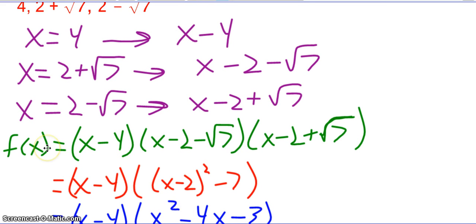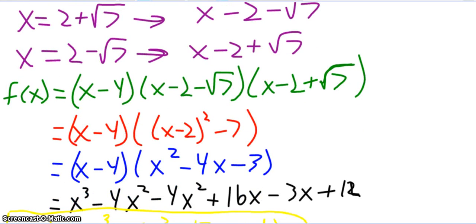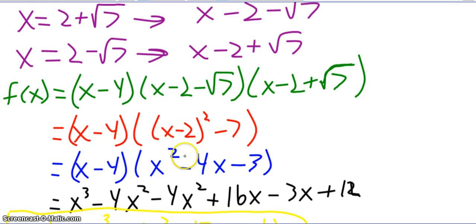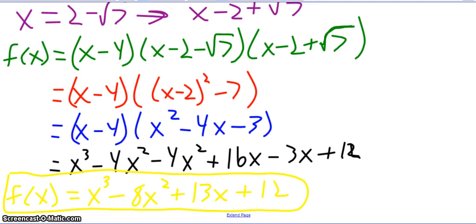So I can rewrite this as a polynomial: f of x equals the quantity x minus 4 times the quantity x minus 2 minus root 7 times the quantity x minus 2 plus root 7. Multiply out the roots together first — treat it like difference of squares. Both have x minus 2, so that's x minus 2 squared, and negative root 7 times positive root 7 becomes minus 7. This quantity becomes x squared minus 4x minus 3, still times x minus 4. Continuing with the distributive property and combining like terms gives f of x equals x cubed minus 8x squared plus 13x plus 12.